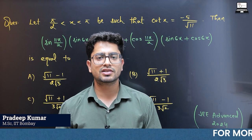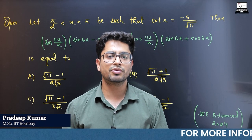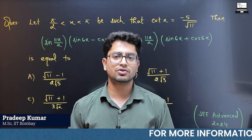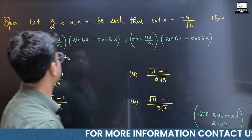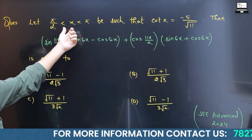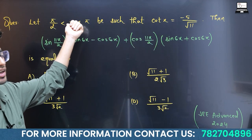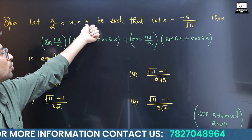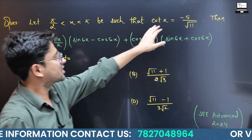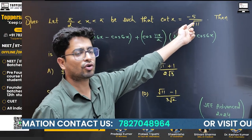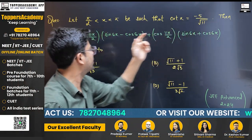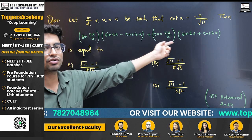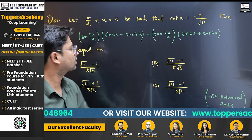Today we'll discuss one question from JEE Advanced 2024. The question is: x is in the second quadrant (π/2, π) such that the value of cot(x) is −5/√11, and we have to find the value of the given expression.